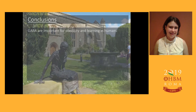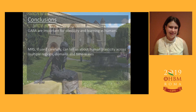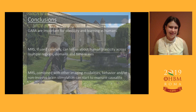I hope I've persuaded you that GABA changes are important for plasticity and learning in humans across a range of situations, and that MRS — if used carefully, as we've heard a lot about when designing experiments — can tell us about human plasticity across multiple regions, domains, and timescales. If you combine it with other imaging modalities, behaviour, or non-invasive methods, we can really start to get a little bit closer towards examining causality. Thank you very much.